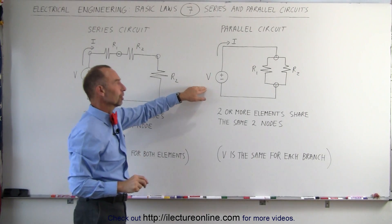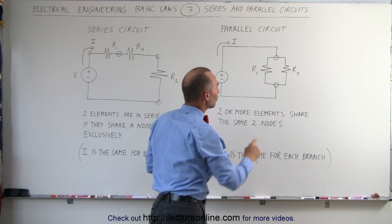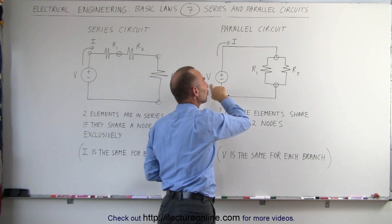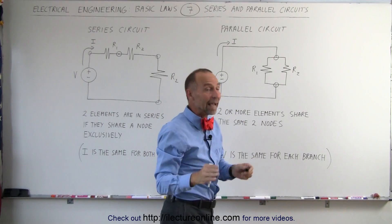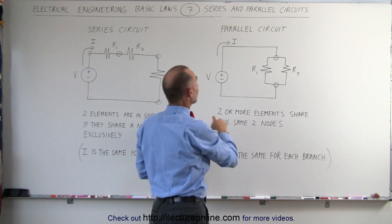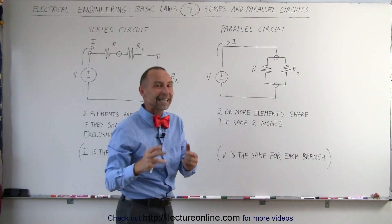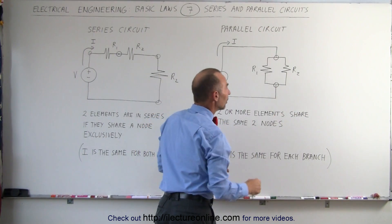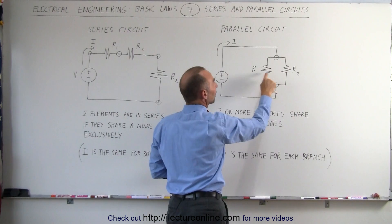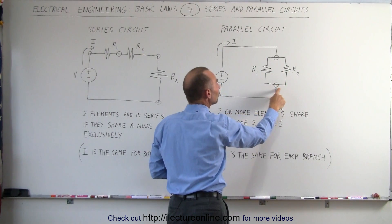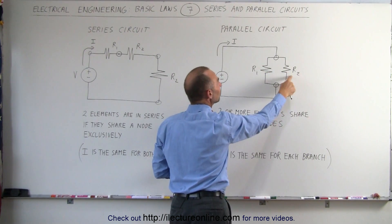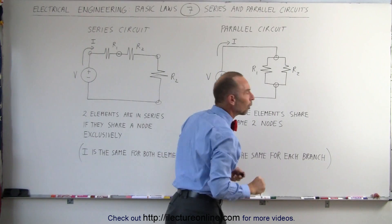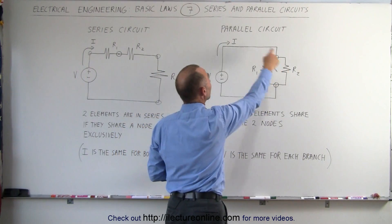Here we have a parallel circuit. Notice that this particular node is shared by R1 and R2, but it is also shared by the voltage source. The definition of a parallel circuit — or elements connected in parallel — is that two or more elements share the same two nodes. You can see that this node and that node are both shared by R1 and R2. Since both elements share this node and that node, you can say that R1 and R2 are in parallel. Therefore this is a parallel circuit.